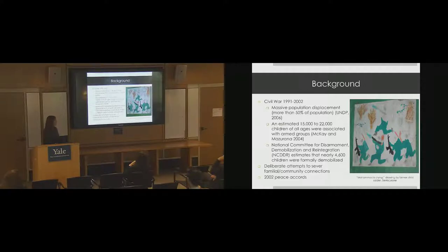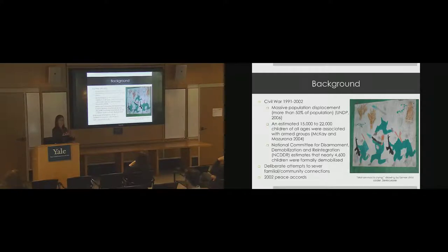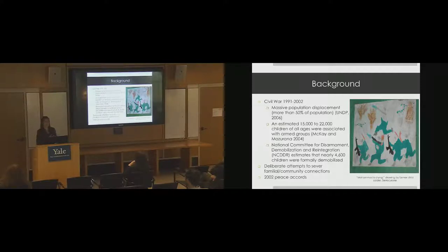Before the Ebola epidemic, there were the vestiges of an 11-year civil war, which raged from 1991 to 2002. The war came to Freetown, the capital, and displaced about 75 percent of the country's population at some point. It was infamous for the involvement of children in armed forces — it's estimated that upwards of 20,000 children were involved. Rebels, especially the RUF, would abduct children and force them to commit atrocities against their own communities, with the intention of severing ties so kids could never return home.